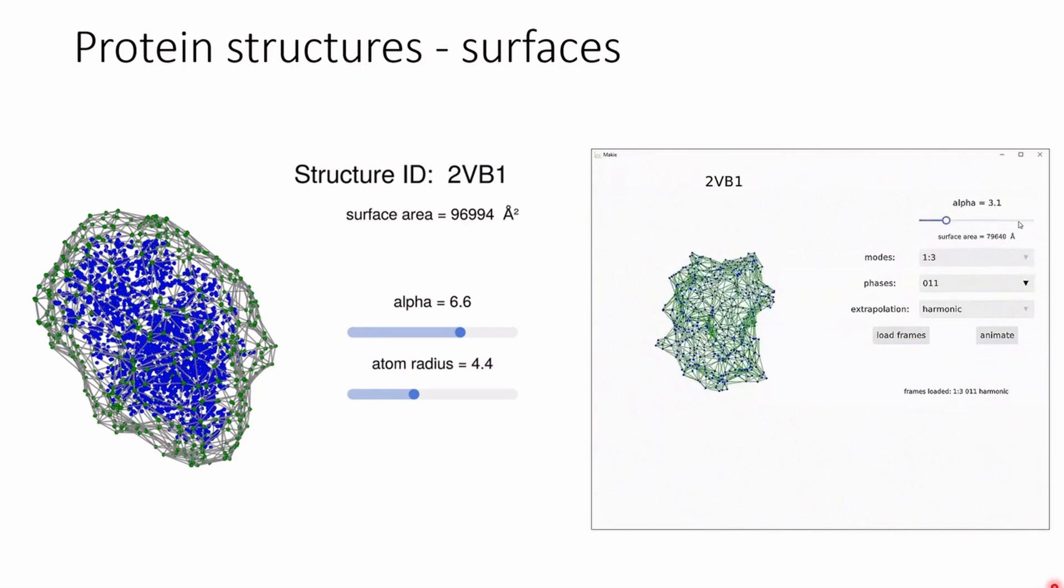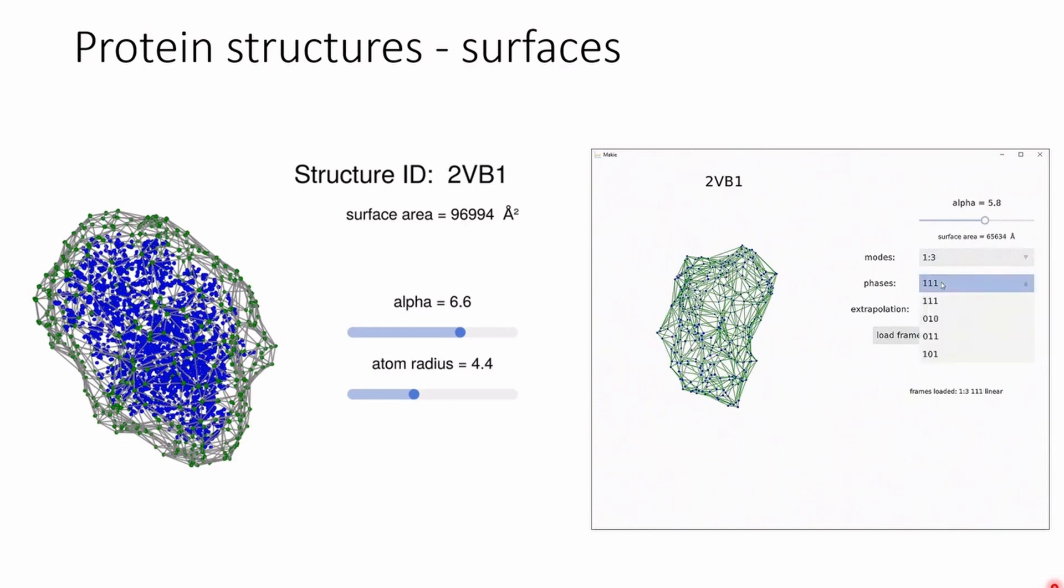On the right is an older example that shows molecular motions in combination with AlphaShape to demonstrate the flexibility of Makie for making user interfaces for all sorts of data.